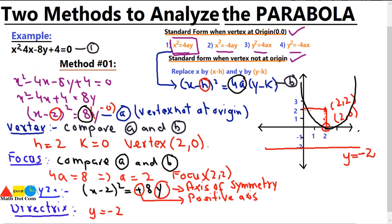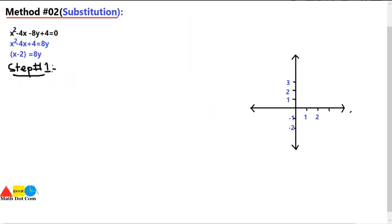That is method one. Now we move to method number two, where we use the substitution method to find the focus, vertex, and directrix of the same example equation. We use the same equation already converted to standard form as equation number 1.